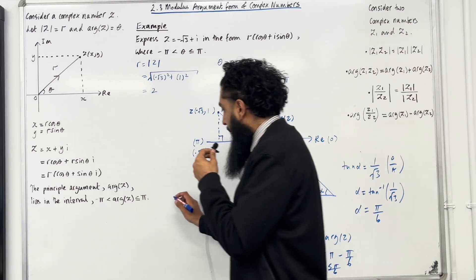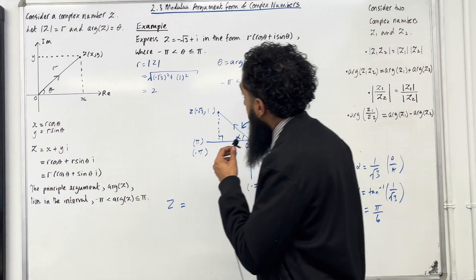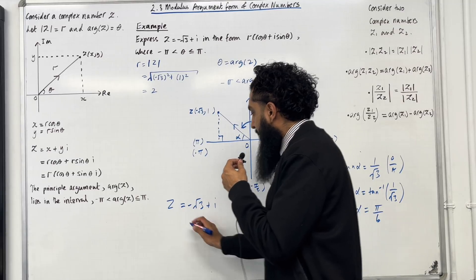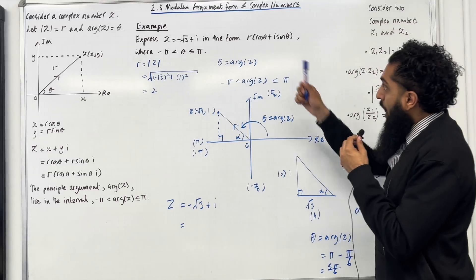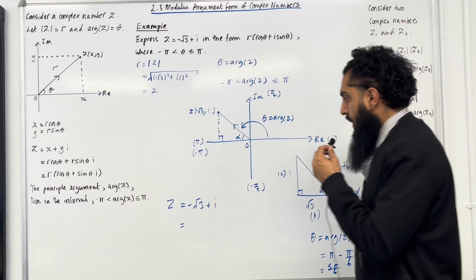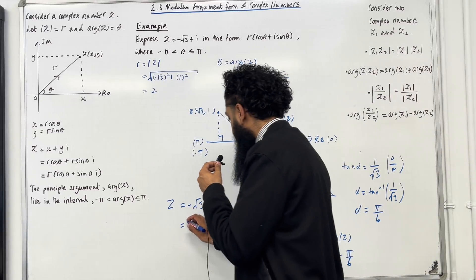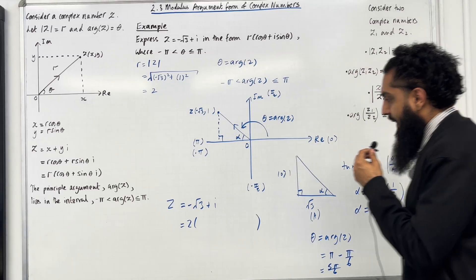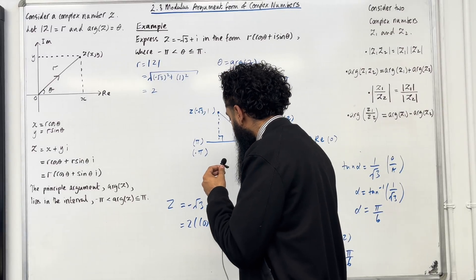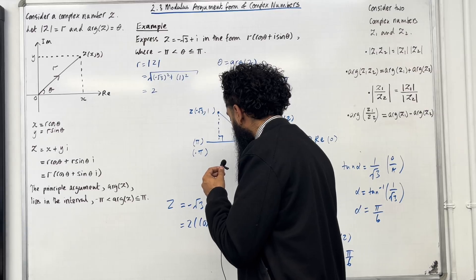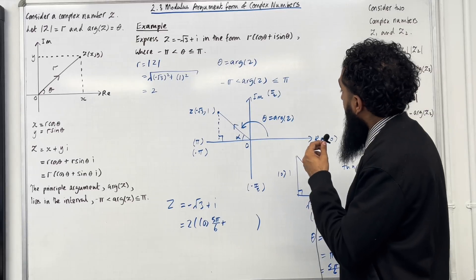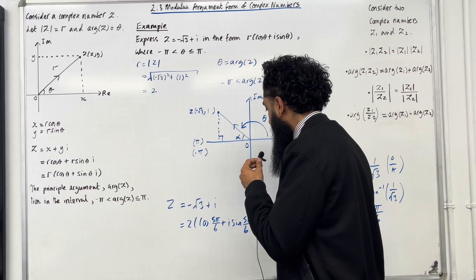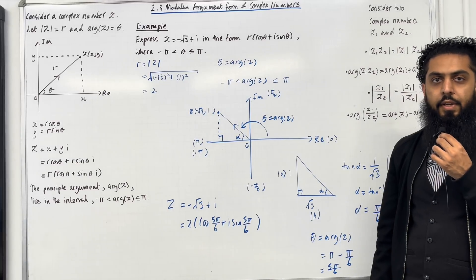So the complex number z = −√3 + i can be written in the form r(cos θ + i sin θ) as: z = 2(cos(5π/6) + i sin(5π/6)). This completes the example.